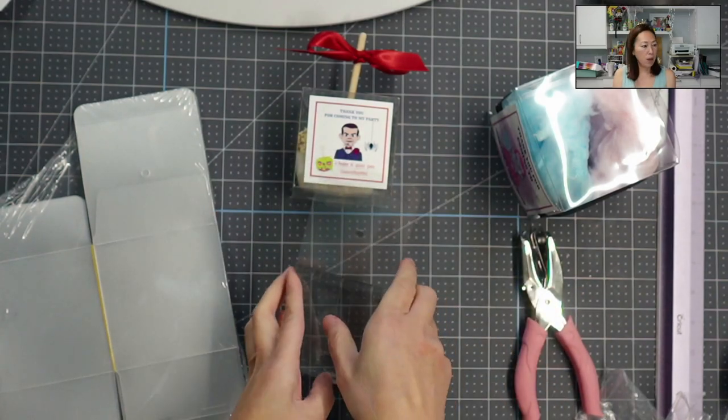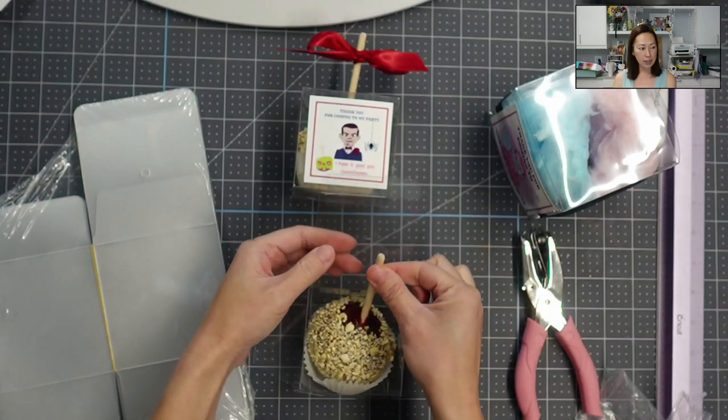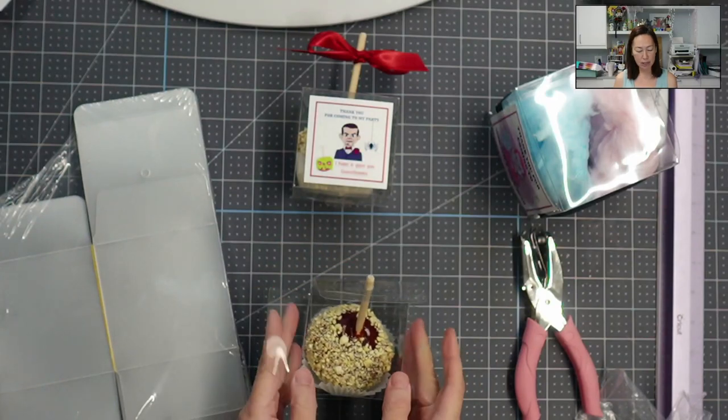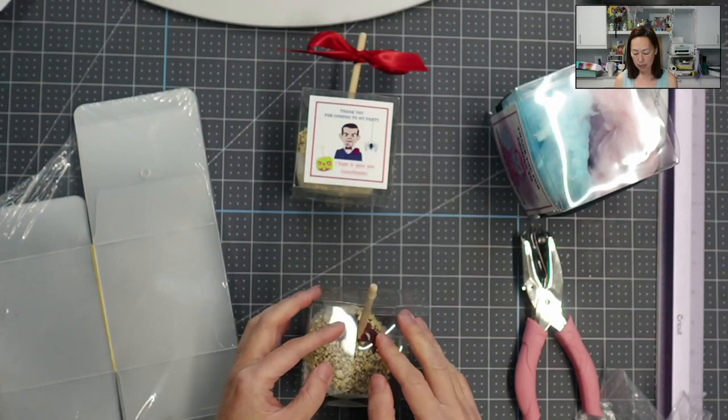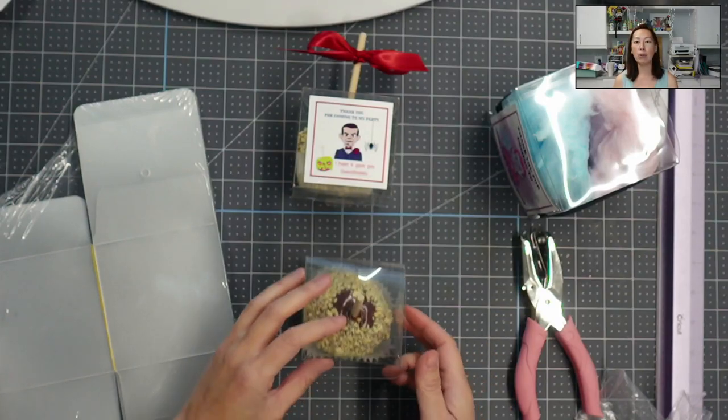So you open this up, stick your candy apple in and you kind of tilt it towards the hole so that goes in the hole, but don't push it down all the way because we need to put the side pieces in. So fold the side pieces in, and then as you pull this up that candy apple will straighten itself out.